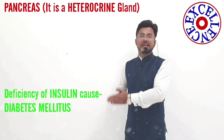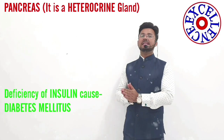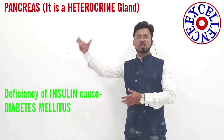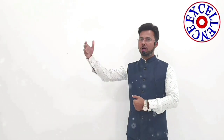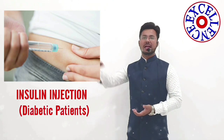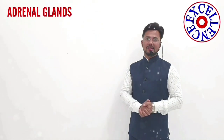The deficiency of insulin leads to a severe disorder called diabetes mellitus. Insulin is given the term hypoglycemic hormone, and glucagon is called the hyperglycemic hormone — it increases the level of glucose, while insulin decreases the level of glucose from the blood by absorption into cells and tissues. In case of diabetes mellitus, insulin is injected into the body to decrease the level of glucose from the blood.